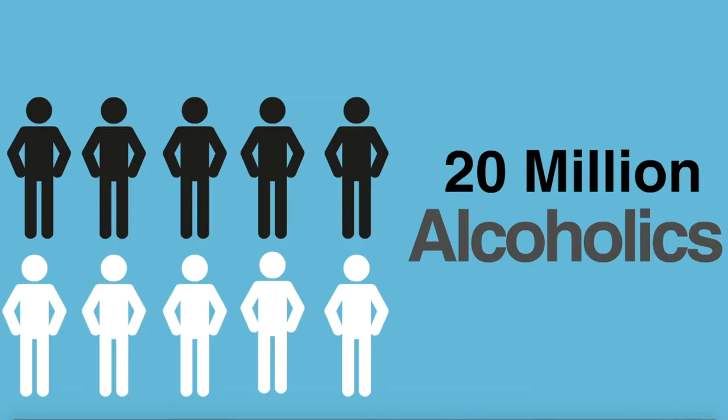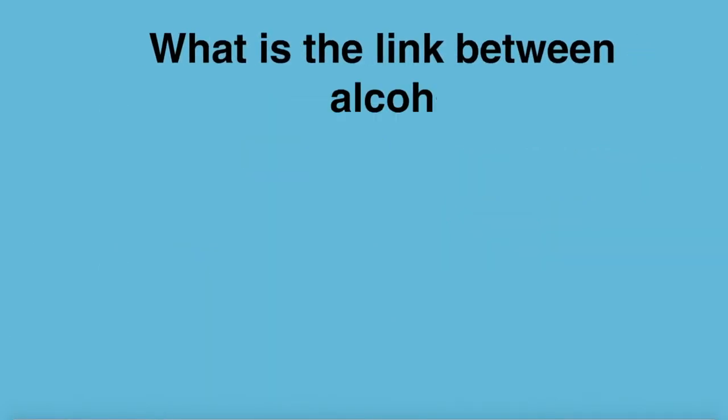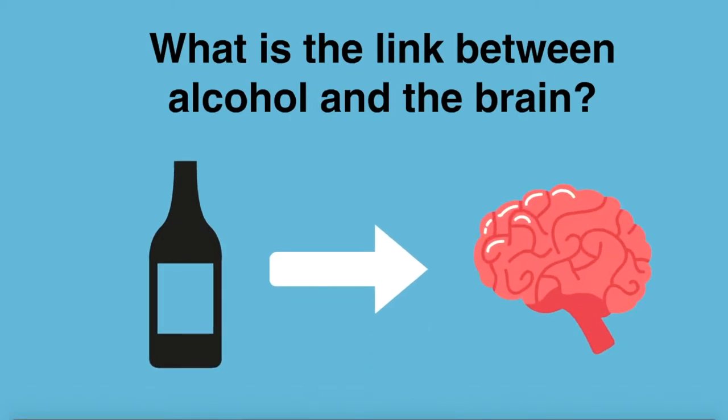Unfortunately, these deficits can persist even with sobriety and have debilitating long-term effects. So, what is the link between alcohol and the brain? How does alcoholism affect the morphology of the brain? What structures change as a result of persistent alcohol consumption?